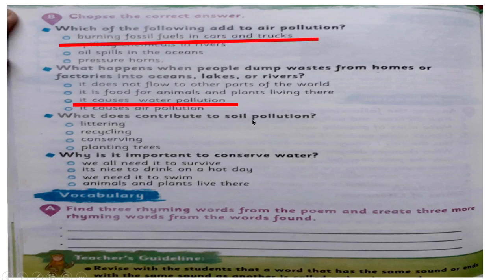What contributes to soil pollution? زمین اور مٹی کی آلودگی میں کیا کیا ہوتا ہے؟ Littering — کوڑا پھیلانا۔ Recycling — ایک چیز جیسے پلاسٹک کو دوبارہ use کرنا۔ Conservation — کسی چیز کو بچا کر رکھنا۔ Planting trees — درخت لگانا۔